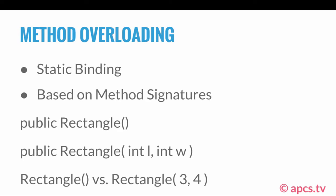Let's say we're in the Rectangle class and we have two constructors. The first constructor is public Rectangle with no parameters. The second constructor is public Rectangle with two parameters: int l and int w. Both of these constructors are in the same Rectangle class, and both have the exact same name — Rectangle — because they're both constructors. The only difference is that one takes no parameters and the other takes two parameters.